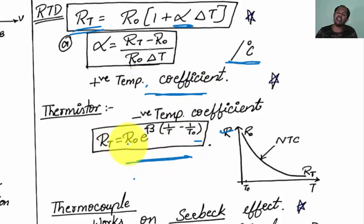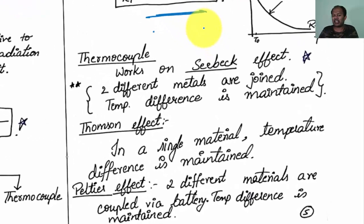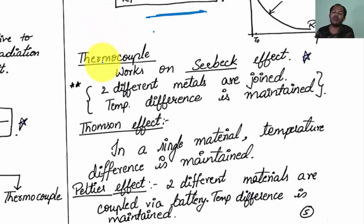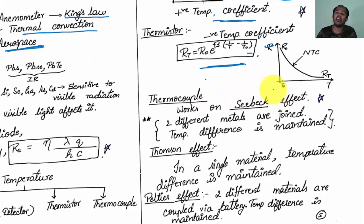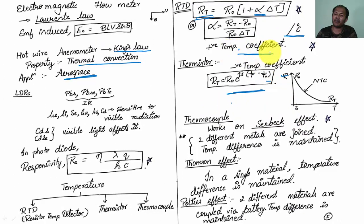For a thermistor, RT = R0 × e^(beta × (1/T - 1/T0)). The thermocouple works on the Seebeck effect, where two different metals are joined and a temperature difference is maintained. In the Thomson effect, a temperature difference is maintained within a single material. In the Peltier effect, two different materials are coupled via a battery and a temperature difference is maintained. For UGC NET exams, remember: thermocouple works on Seebeck effect, RTD has positive temperature coefficient, thermistor has negative temperature coefficient.